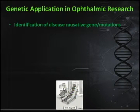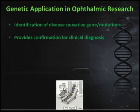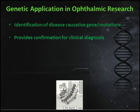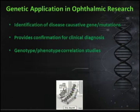First, genetics helps to identify disease-causative genes or mutations. We can use genetics to clone novel genes or to identify mutations in genes that we already know. Genetics can provide confirmation for clinical diagnosis — whenever there is a question on a clinical case, we can confirm that with genetics. There is no gray area in genetics; it's either black or white, either there or it's not. We can also use genetics to study genotype-phenotype correlation, which is very widely used in most clinical research.